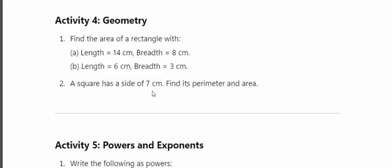A square has a side of 7 cm. The perimeter of the square is equal to 4 times the side. The perimeter equals 4 into 7, which is 28 cm.